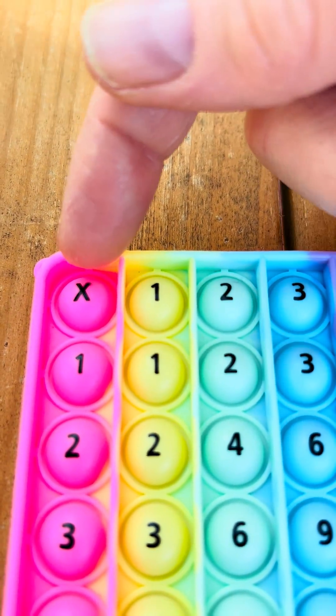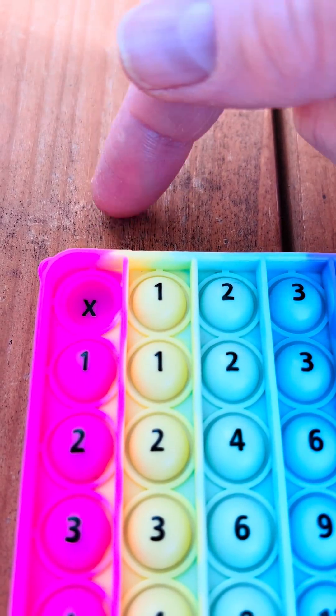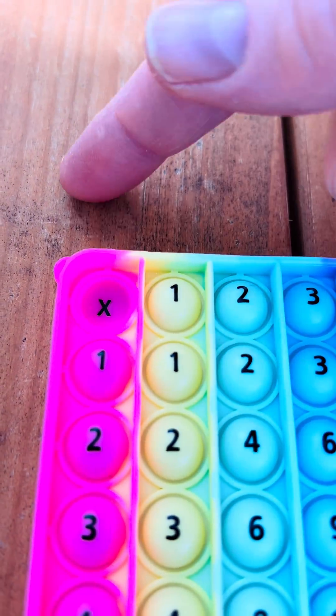This is the letter X. Right here, it means times. So anything you multiply, you're going to go 1 times 1 or 2 times 2, right?